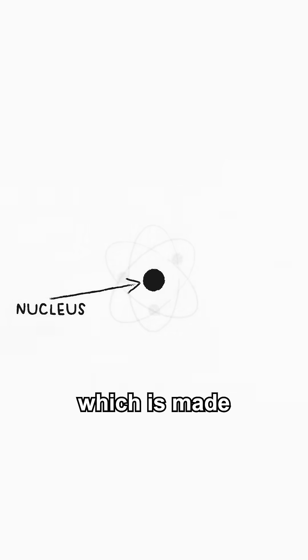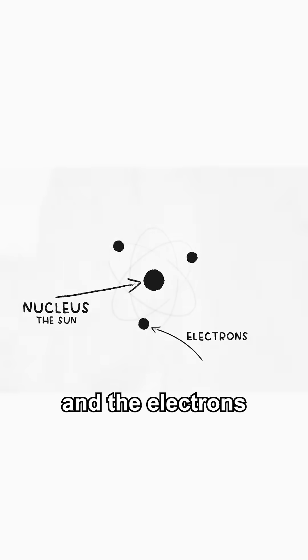The atom's nucleus, which is made of protons and neutrons, is like the sun, and the electrons orbit it like planets.